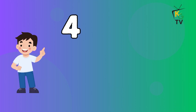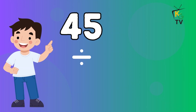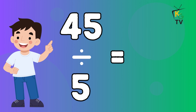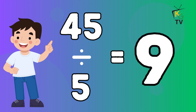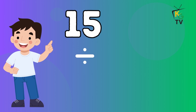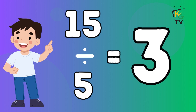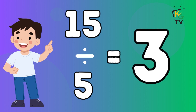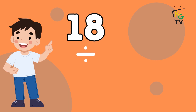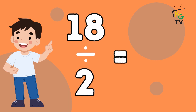45 divided by 5 is equal to 9. 15 divided by 5 is equal to 3. 18 divided by 2 is equal to 9.